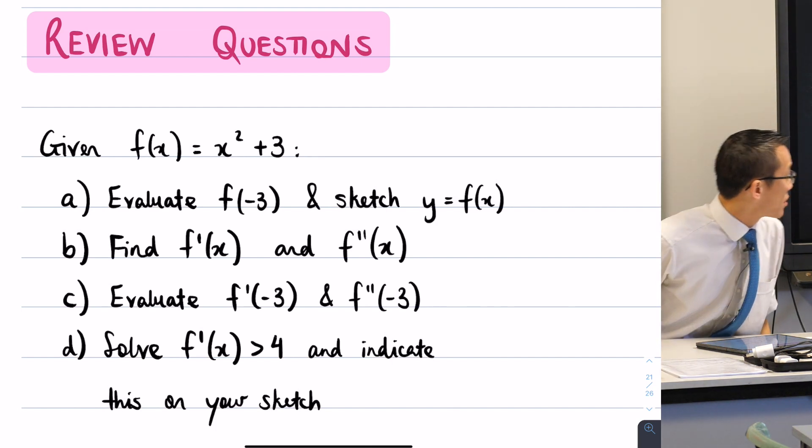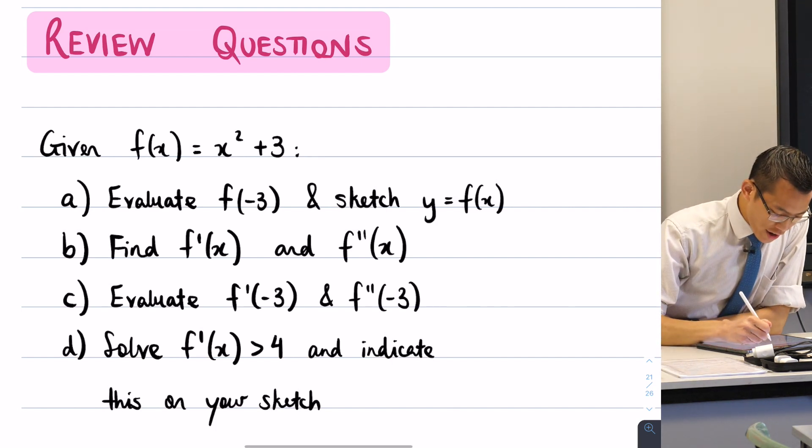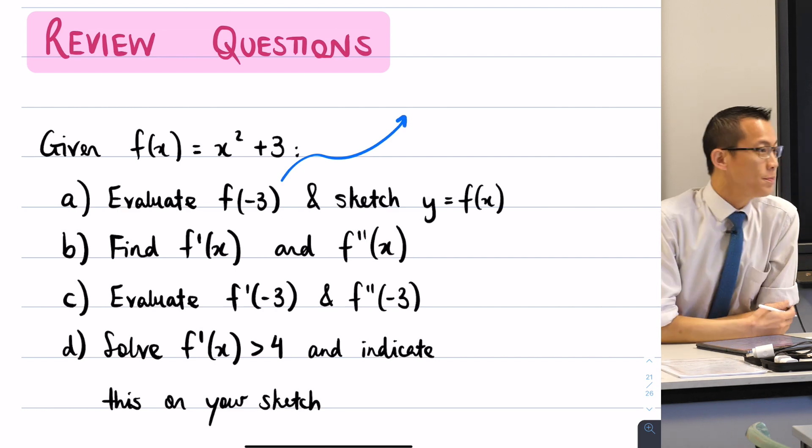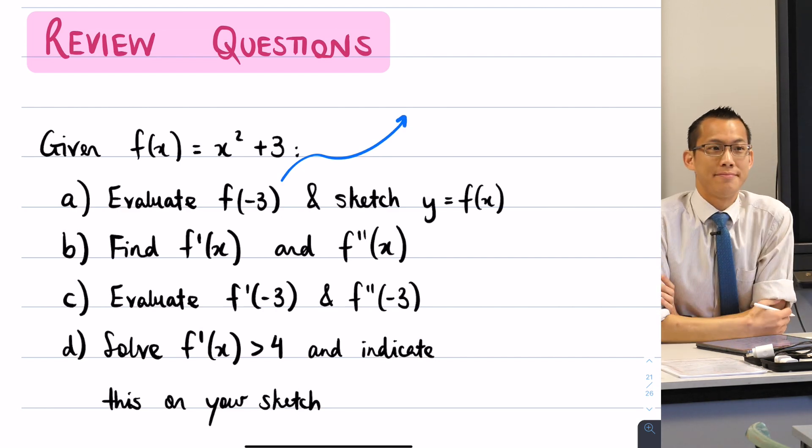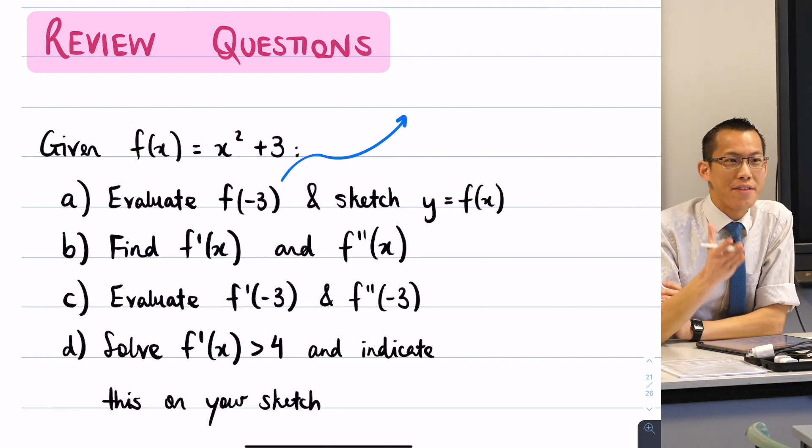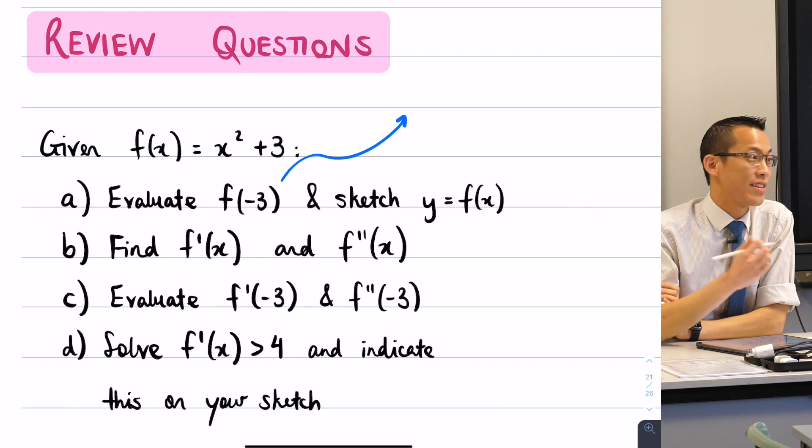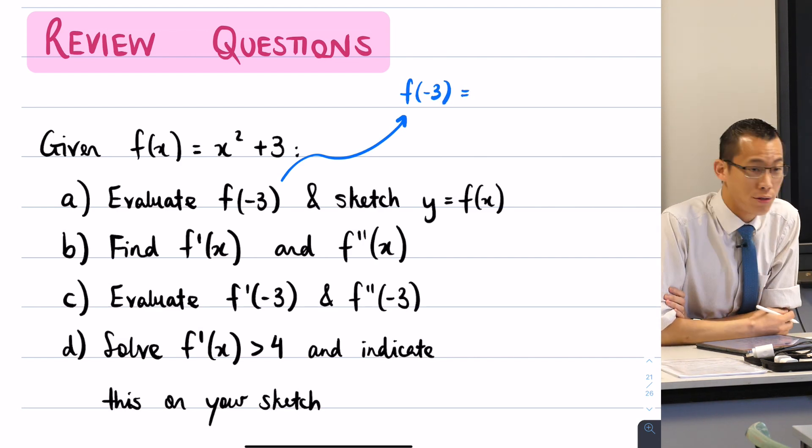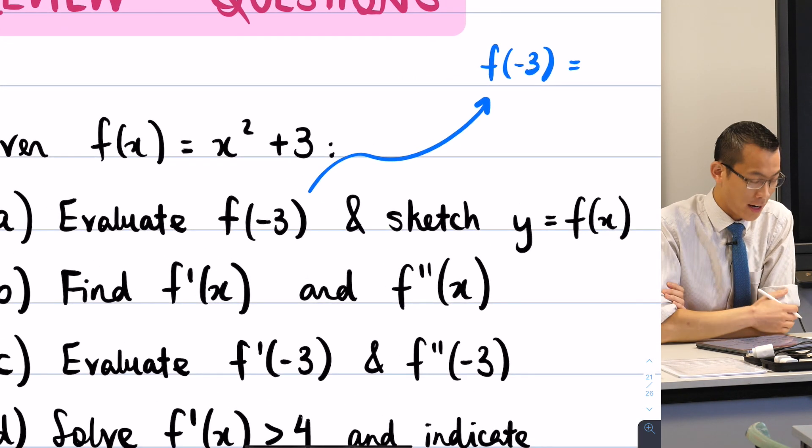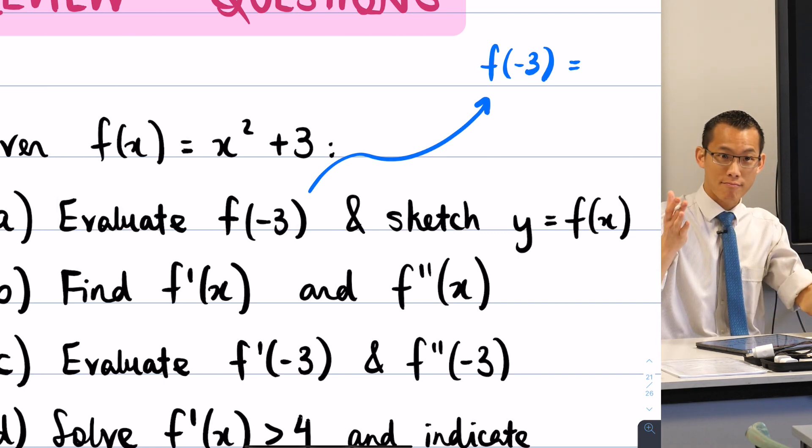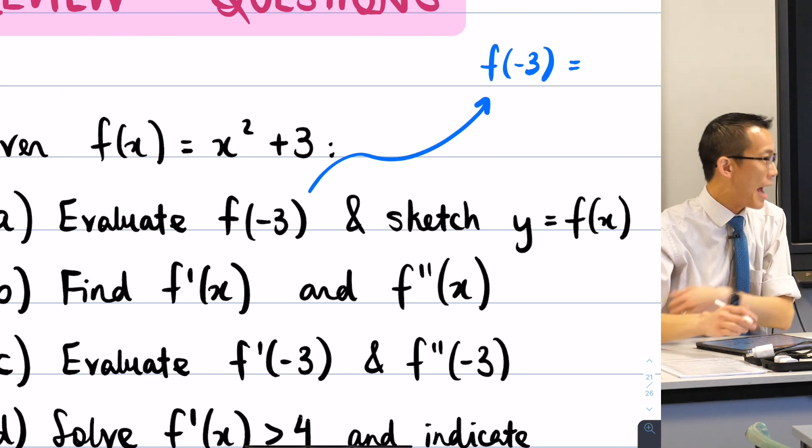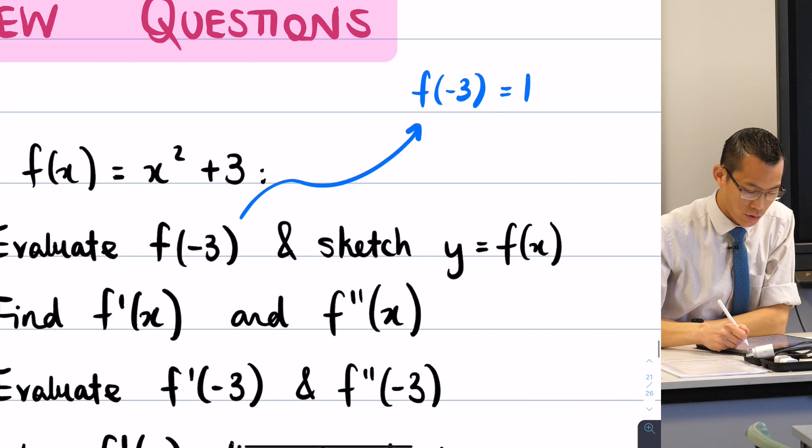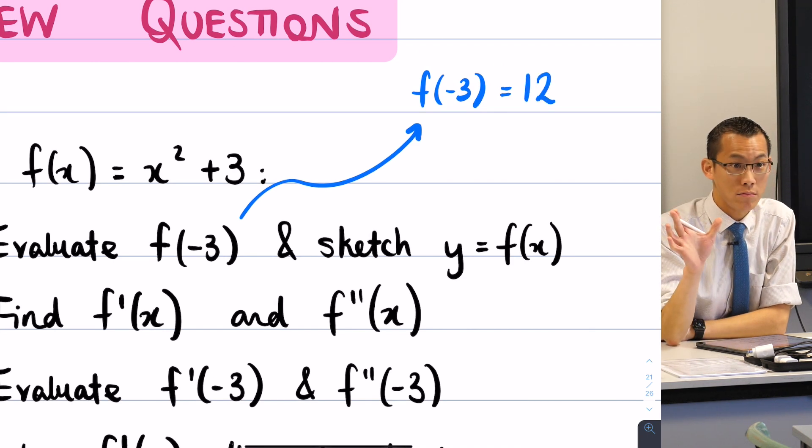So let's have a go at this together. Now I started off nice and gentle, so I give you a function and then I ask you to evaluate that function at x equals negative 3. So f of negative 3 equals, and hopefully you are okay to do this substitution in here, negative 3 all squared just becomes 9, you add your 3 and you get 12. So far so good.